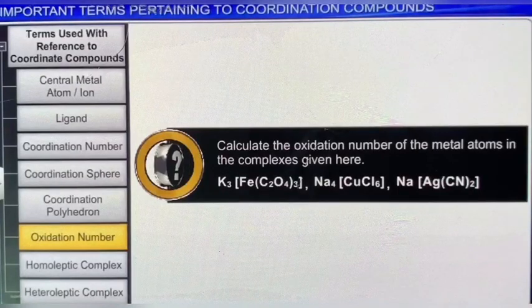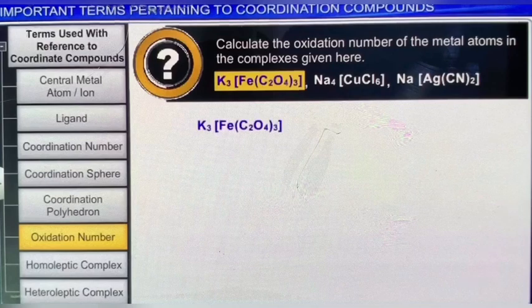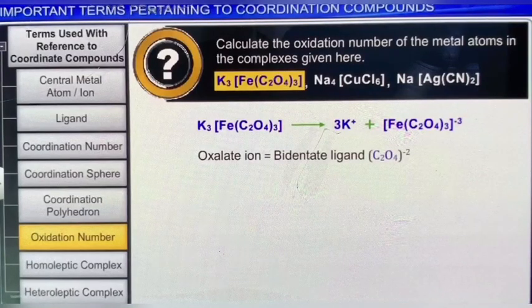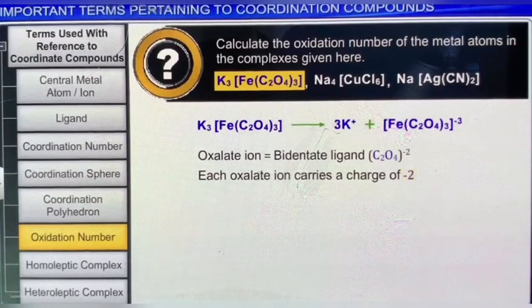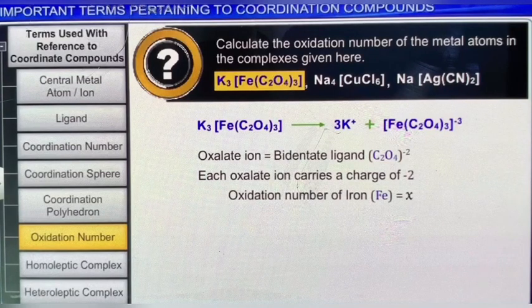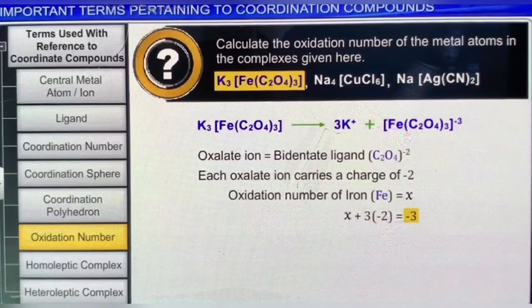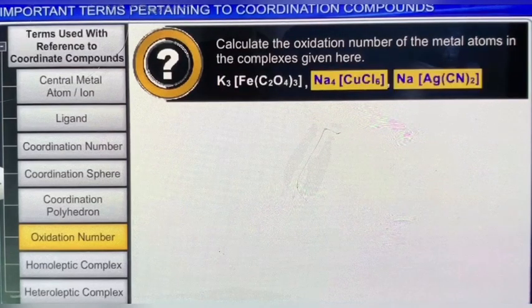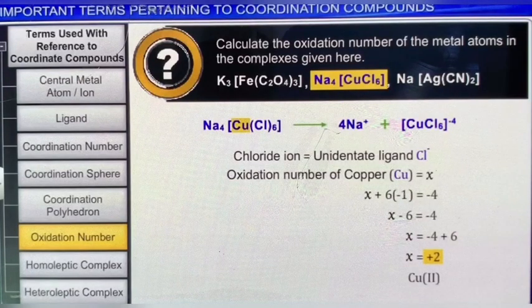Here is a simple problem: calculate the oxidation number of the metal atoms in the given complexes. In the first case, there are three cations outside the coordination sphere, so the charge on the complex ion is −3. The oxalate ion is a bidentate ligand; each oxalate ion carries a charge of −2. The oxidation number of iron, assumed as X, is calculated as X + 3(−2) = −3, giving X = +3. Hence, the oxidation number of iron is +3. Similarly, the oxidation numbers of copper and silver in the other two complexes are calculated as +2 and +1 respectively.